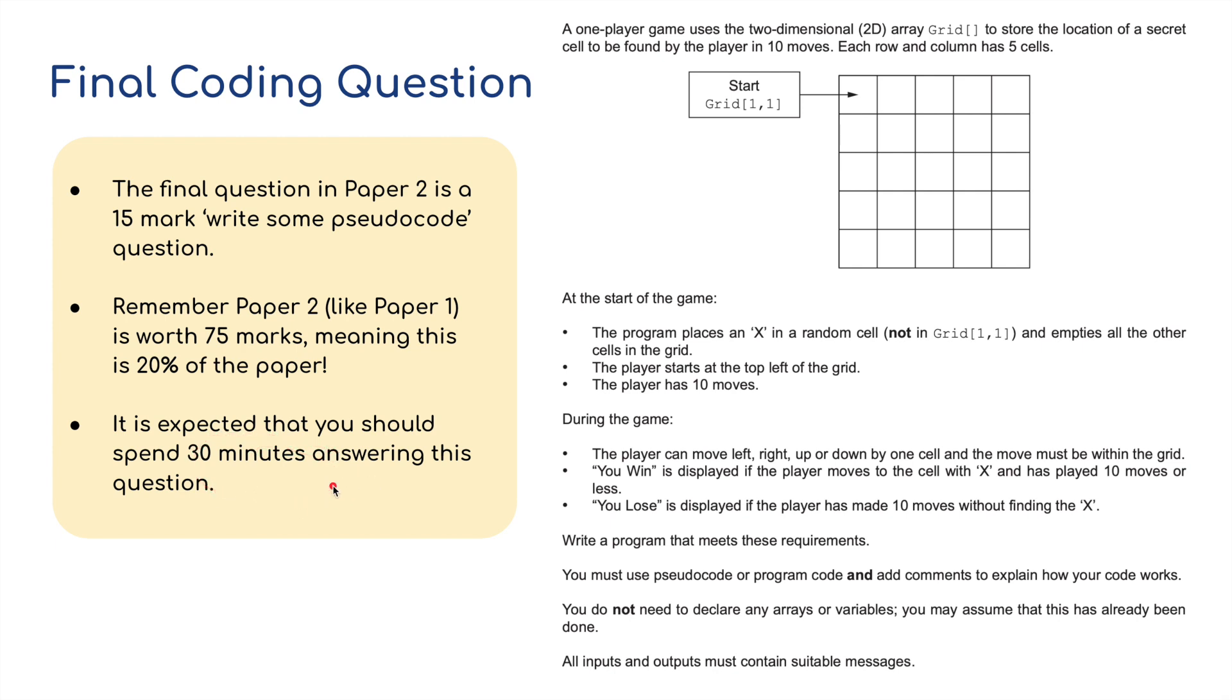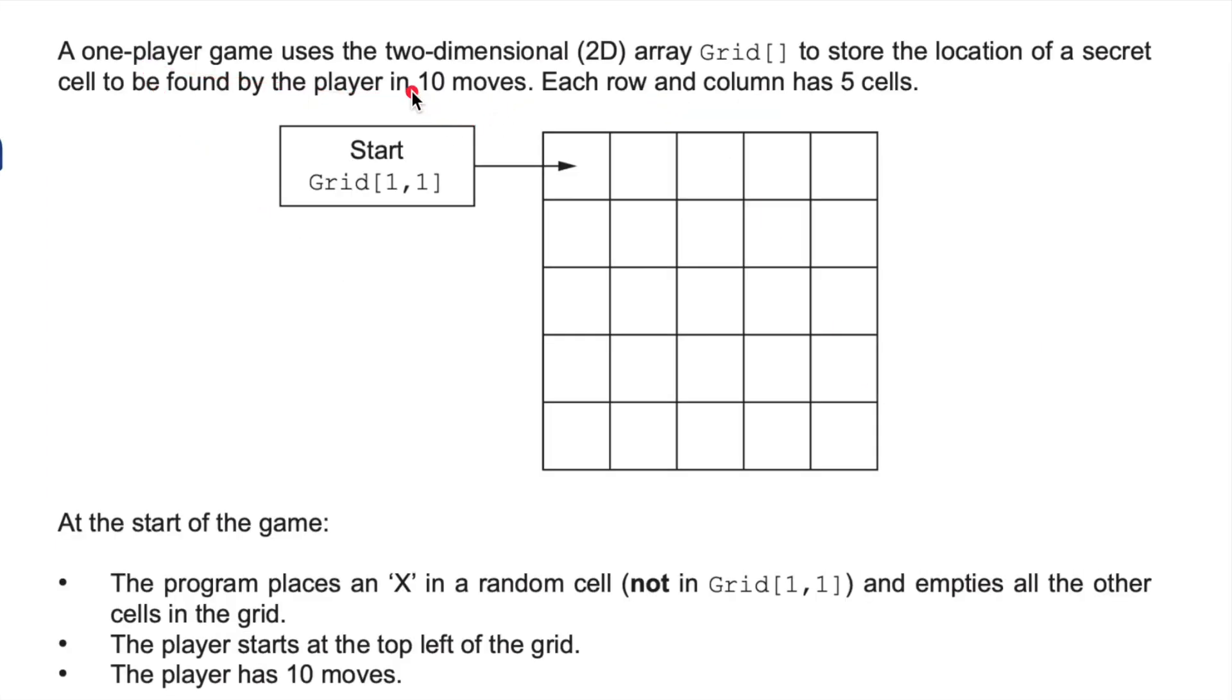So I'm going to show you how we can do it, how we can break it down, the steps we need to take. Let's have a read. A one-player game uses a two-dimensional 2D array grid to store the location of a secret cell to be found by the player in 10 moves. Each row and column has five cells. You can see here five going across, five columns, and five rows.